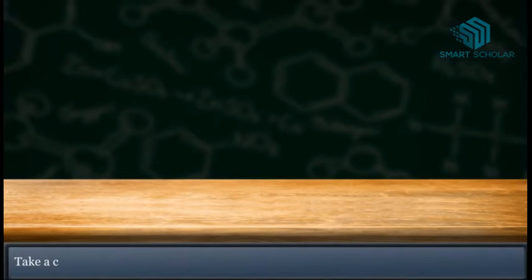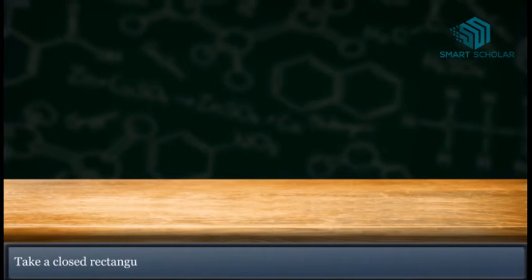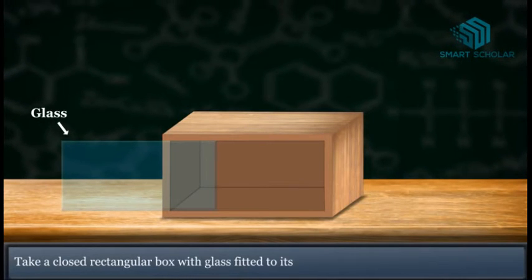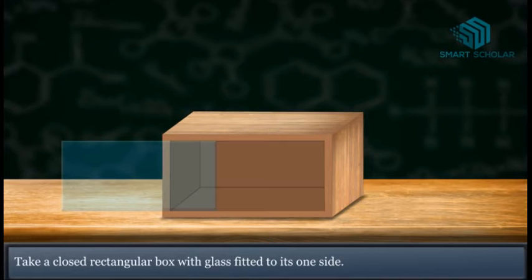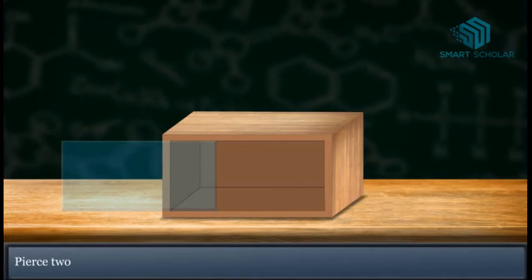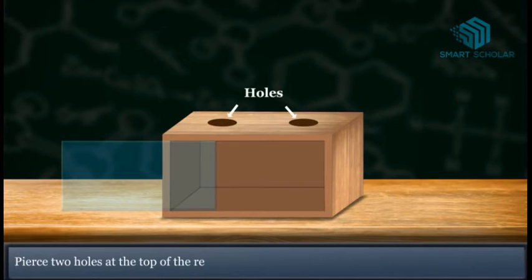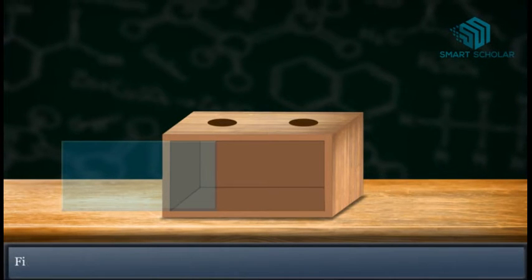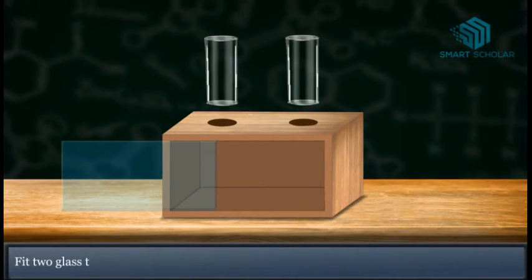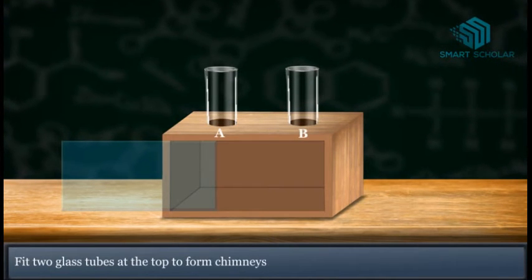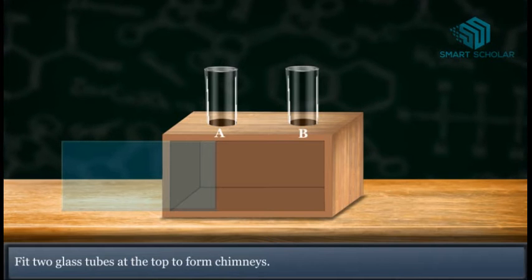Take a closed rectangular box with glass fitted to one side. Make two holes at the top of the box and fit two glass tubes to form chimneys: chimney A and chimney B.